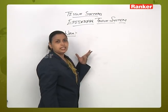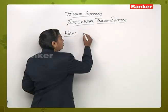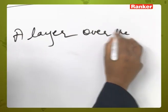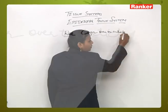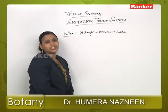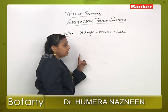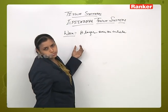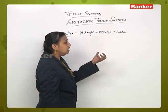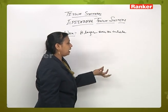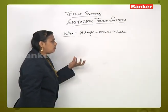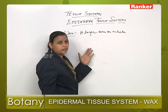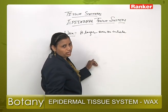What is wax? It occurs in the form of a layer over the cuticle. In many land plants, it occurs as a layer over the cuticle and it may appear in many forms. For example, different plant species may show the occurrence of wax either in pointed form, granule form, rod-shaped form, or in stellate type structure. Depending upon the different plants, you will see the arrangement of the wax layer.